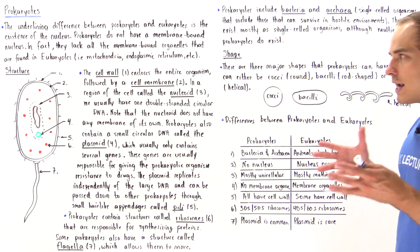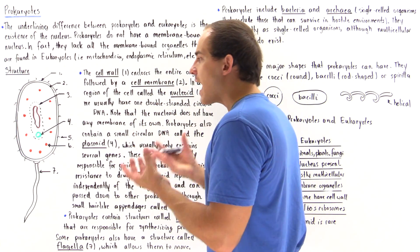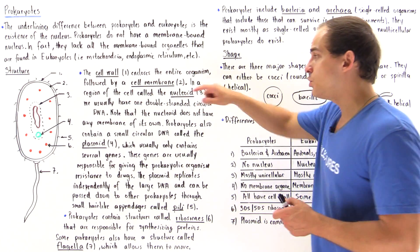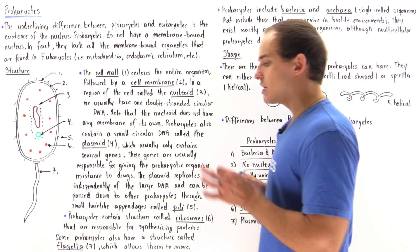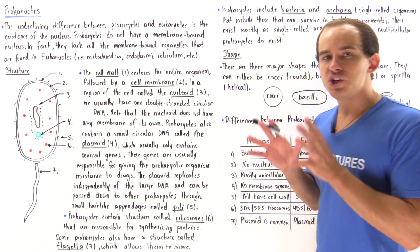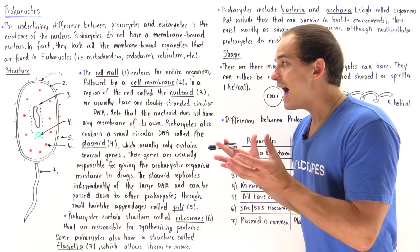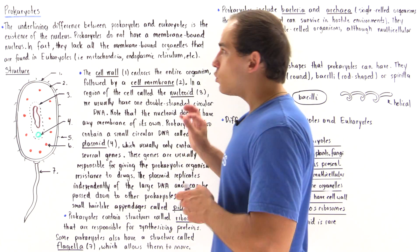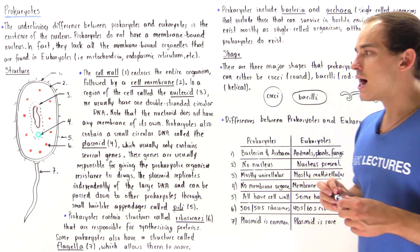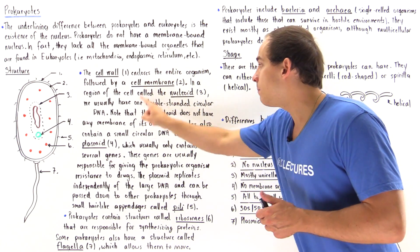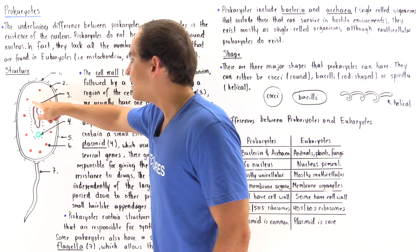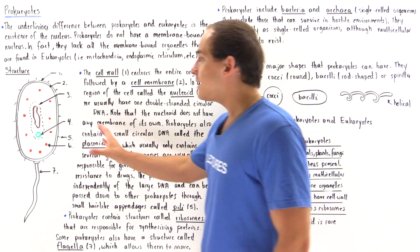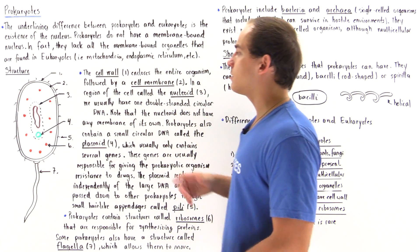Within our prokaryotic cell, we have a region that contains our DNA, our genetic information, and this region is called the nucleoid or the nucleoid region. The nucleoid region is not the nucleus — it does not have a membrane like our nucleus does inside the eukaryotic cell. Inside a prokaryotic cell, we basically have a single double-stranded circular DNA that contains our genes coding for the proteins that exist and function within our prokaryotic cell.